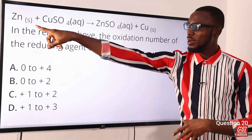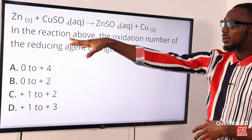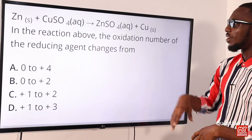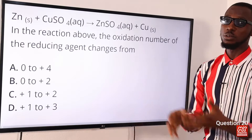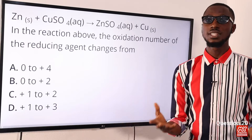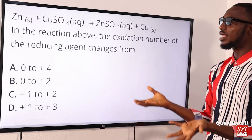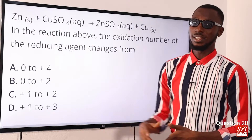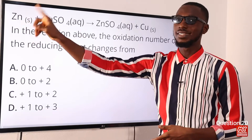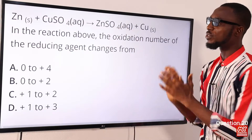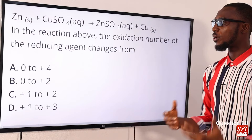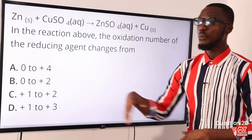Question 20: Zinc in solid state plus copper tetraoxosulfate(VI) — in the reaction above, the oxidation number of the reducing agent changes from what to what? First, identify the reducing agent from the reactant side: zinc. The oxidation state of zinc is zero on the reactant side, and when worked out it becomes plus two on the product side. So it changes from zero to plus two. The correct option is option B: zero to plus two.